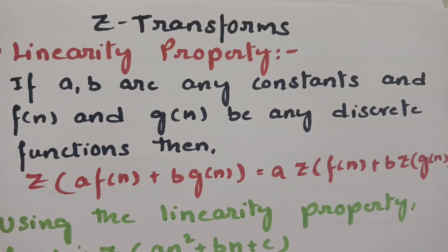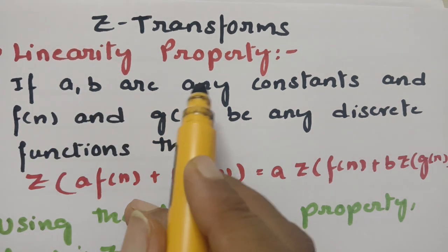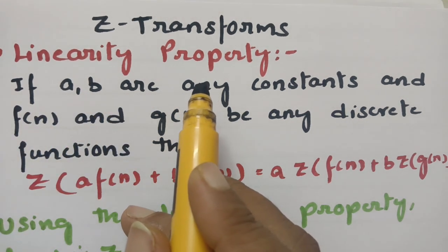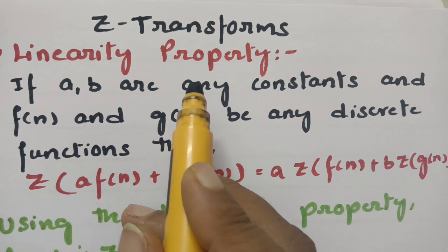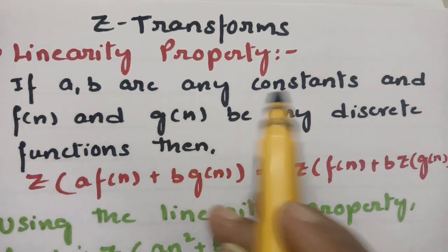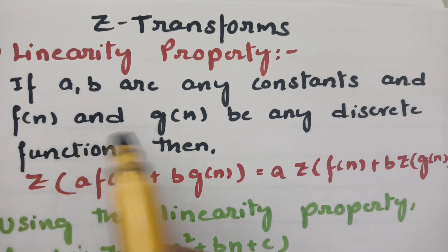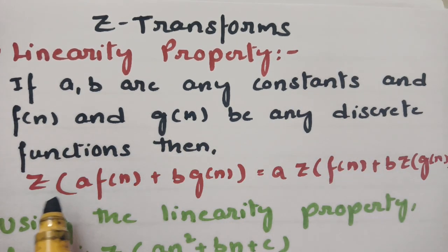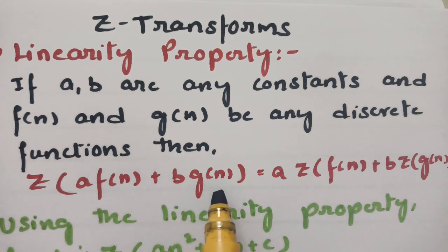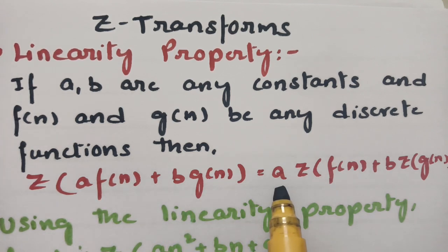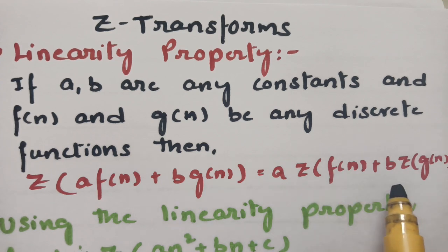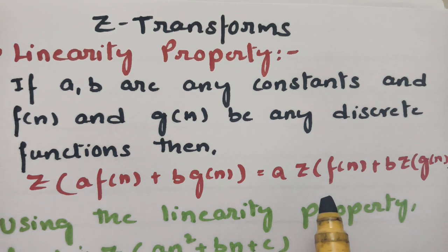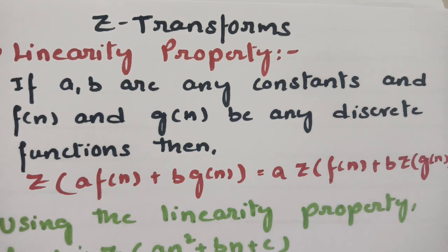Today's video is from Z transforms, and I am going to explain what is the linearity property and how it is used to solve problems from Z transforms. If a and b are any constants and f(n) and g(n) are any discrete functions, then the Z transform of a·f(n) + b·g(n) can be written as a·Z{f(n)} + b·Z{g(n)}. This is the linearity property.